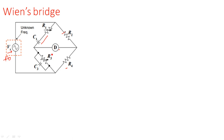When we have a parallel combination of resistance and capacitance in any bridge arm, it is better to use admittance instead of impedance. Using admittance gives easier calculations compared to impedance when dealing with a parallel RC combination.